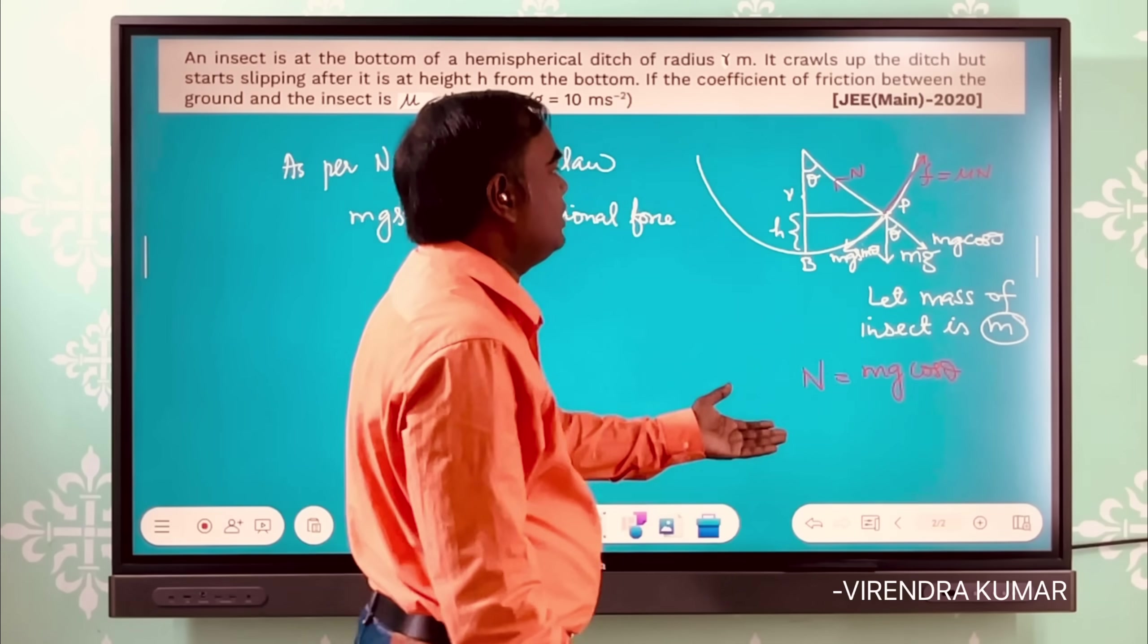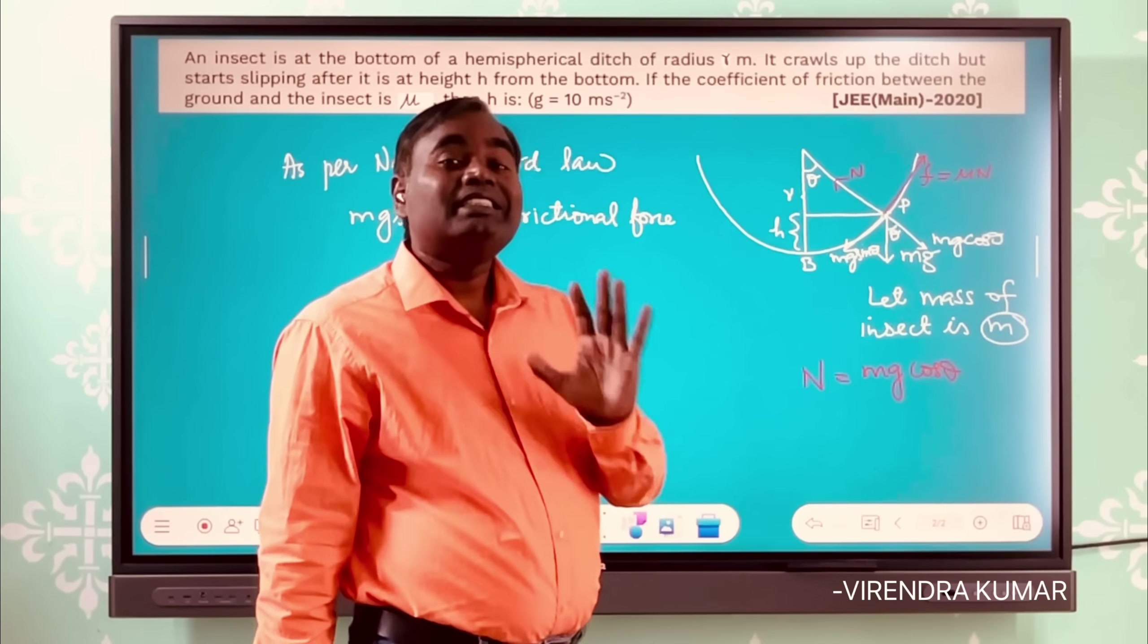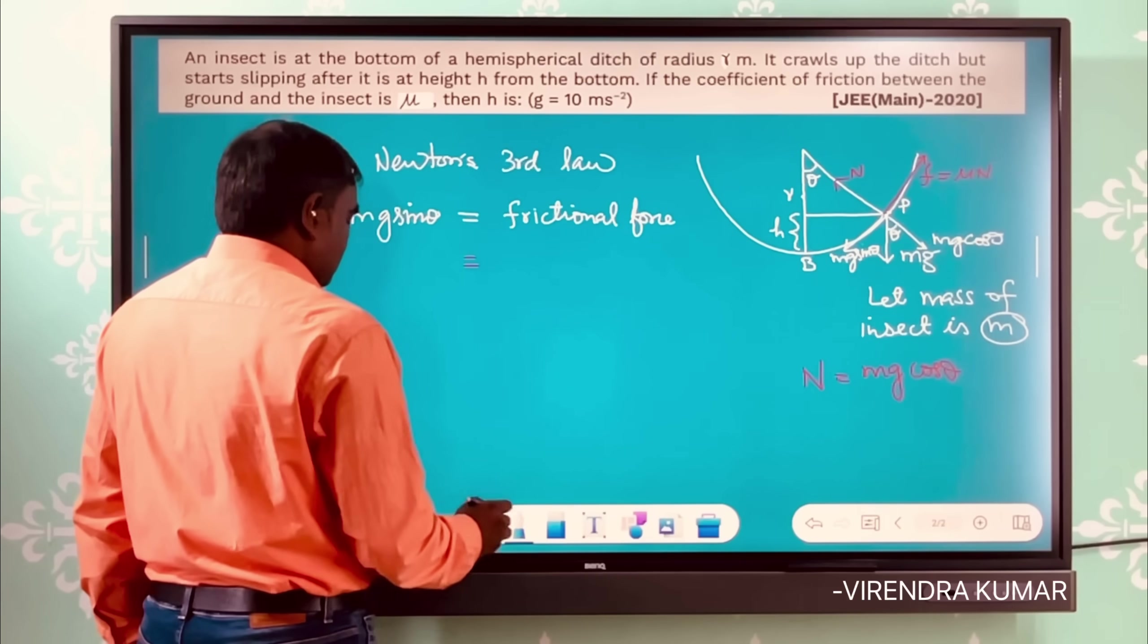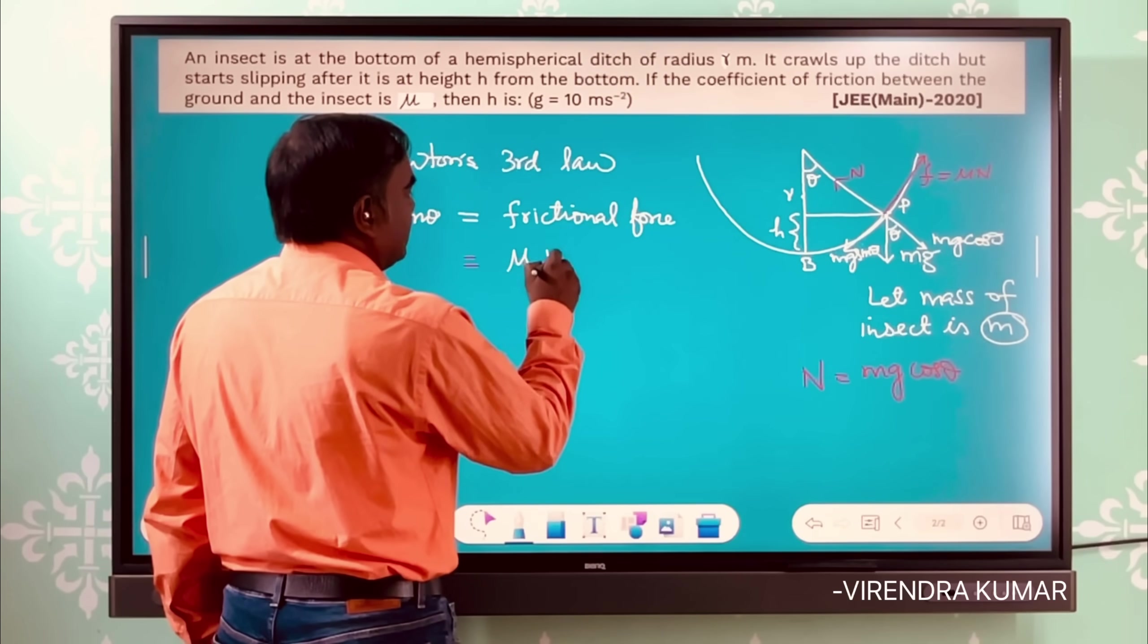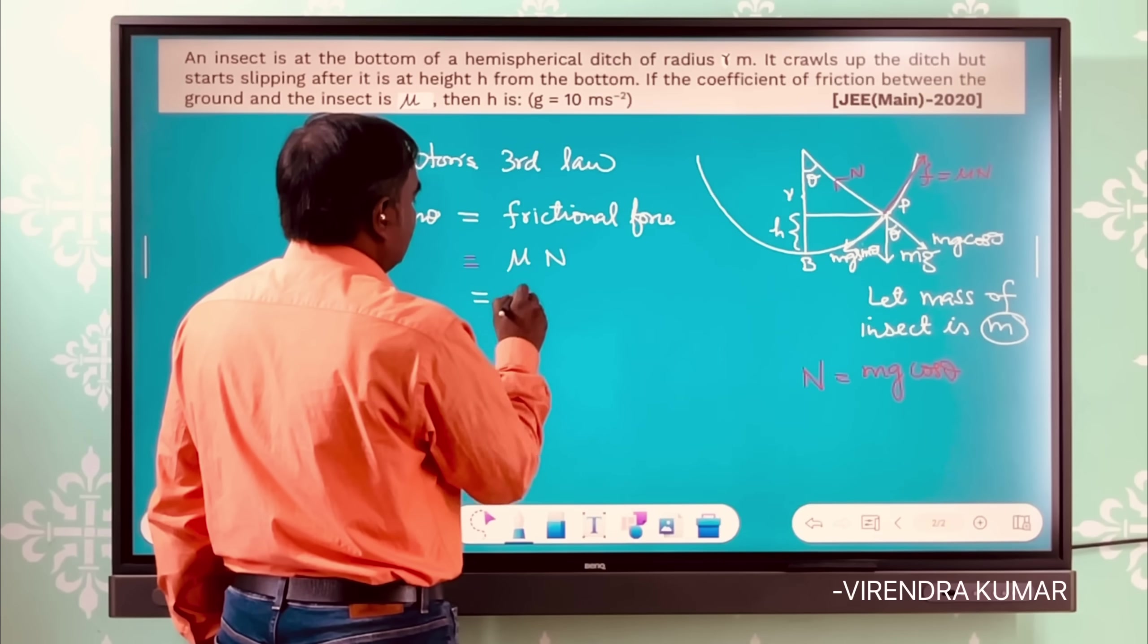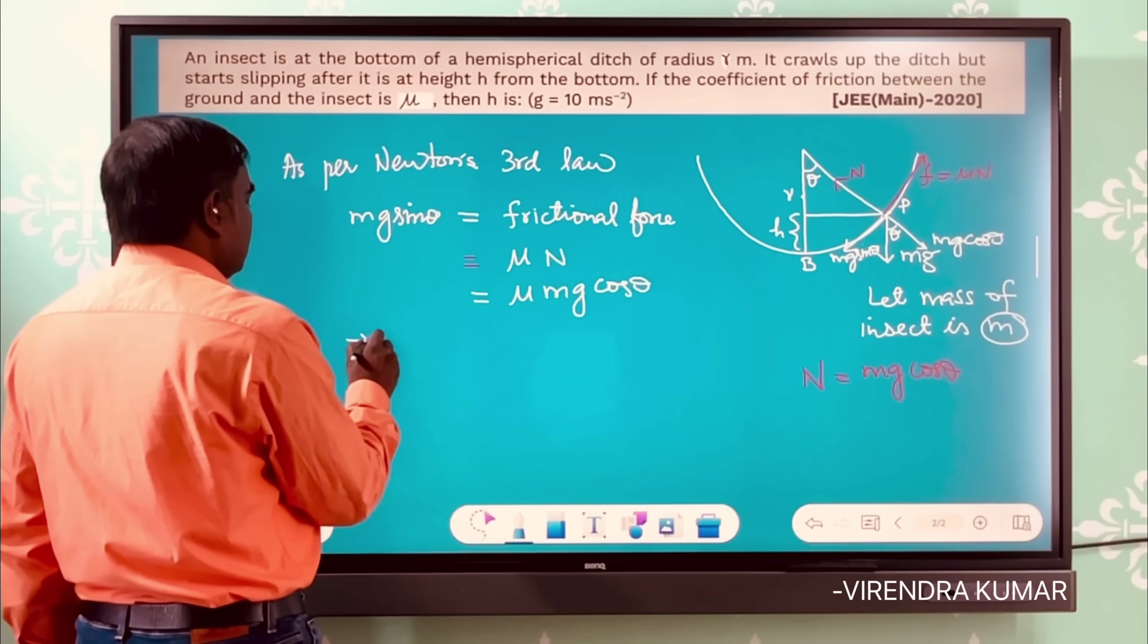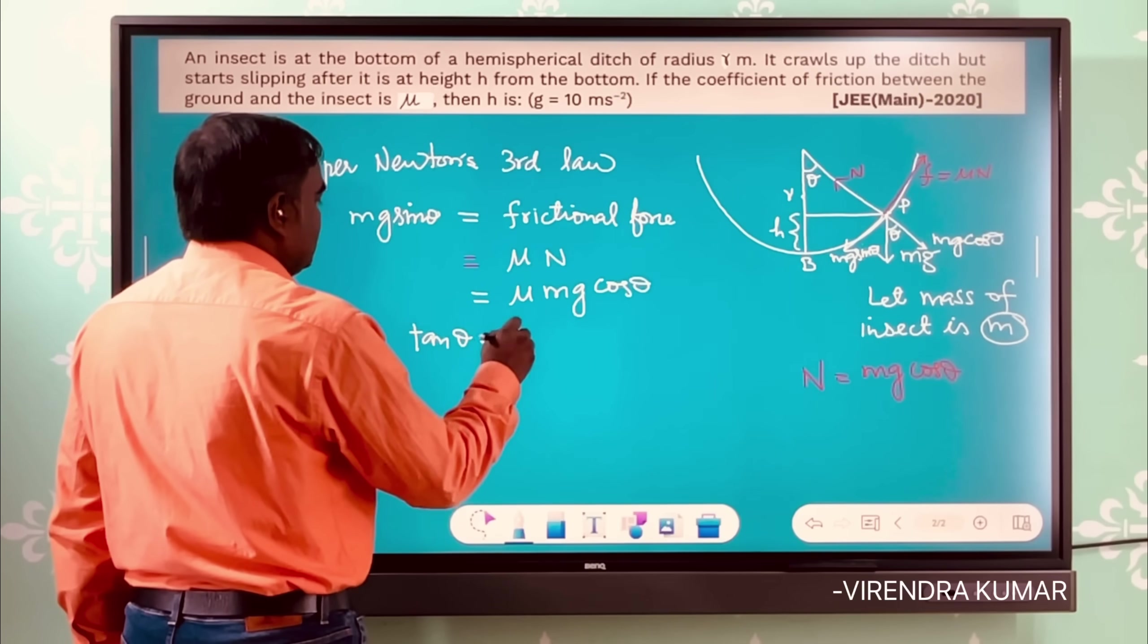This normal reaction will be produced by the ground on the insect. So our frictional force will be equal to μ times n, which equals μ mg cos θ. So this gives tan θ is equal to μ.